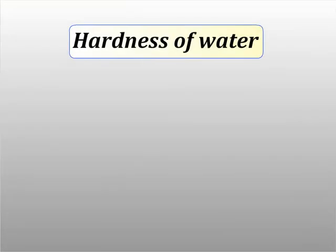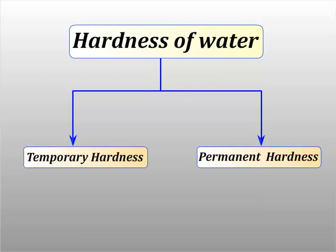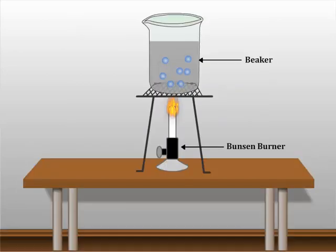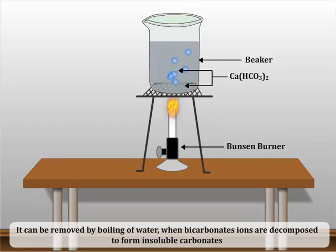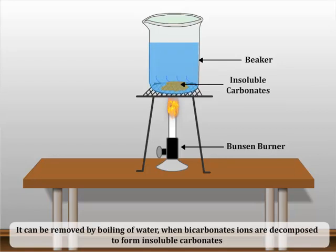Hardness of water is divided into two parts: temporary and permanent. Temporary hardness is due to the presence of bicarbonates of calcium and magnesium. It can be removed by boiling of water, when bicarbonate ions are decomposed to form insoluble carbonates.